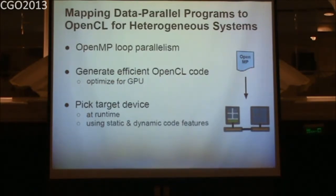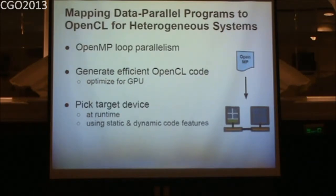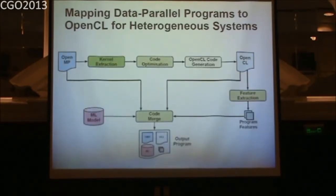The way we pick a target device is by using both static and dynamic code features. Static code features come from analyzing the code — things like how many floating-point instructions versus memory instructions we have, giving us the computation-to-communication ratio. But it also depends on runtime factors, so we take things like input size into account.